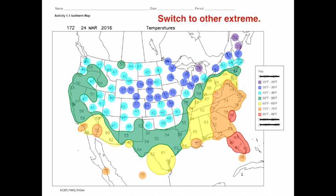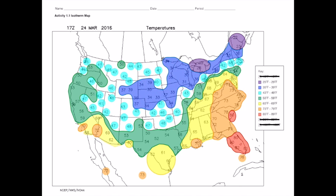At this point it's probably easier to switch and start doing the lows. I'll go down and do the 20s in purple now. Next I'll shade the 30s in dark blue. If I've done this part correctly the rest of the map can all be shaded in for the 40s.